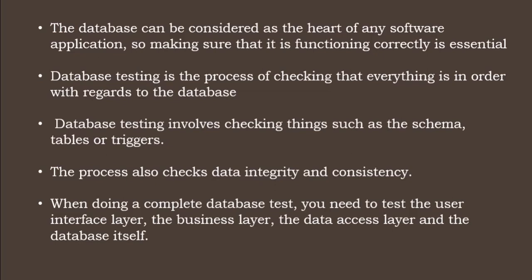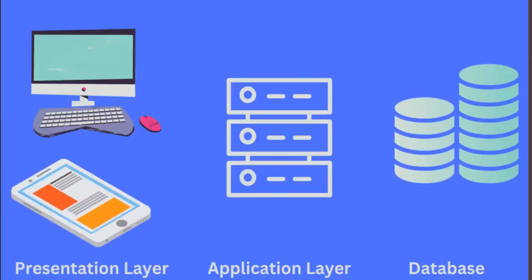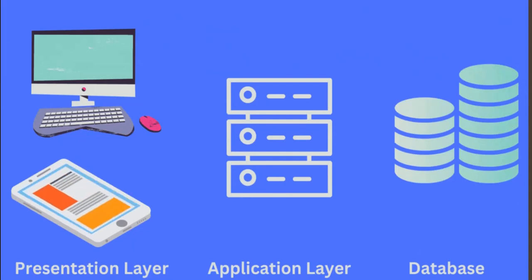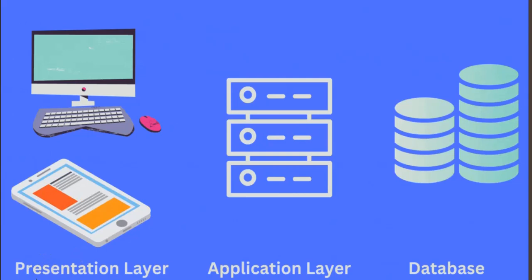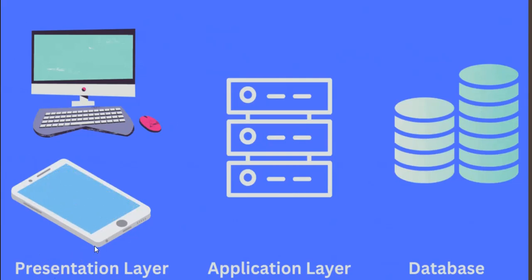The process also checks data integrity and consistency. When doing a complete database test, you need to test the user interface layer, business layer, data access layer, and the database itself. To understand this, let's look at an example of a layered order structure — whenever you use any application through mobile or desktop, that layer is called the presentation layer or interface layer.